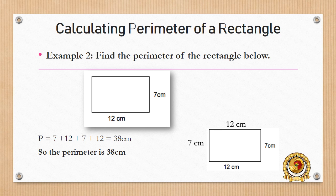So if the right part of the length is 7 cm, and the lower part of the rectangle is 12 cm, the upper part of the rectangle will also be 12 cm.